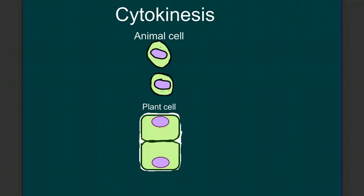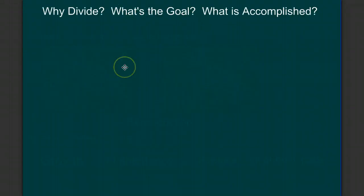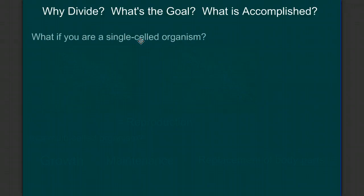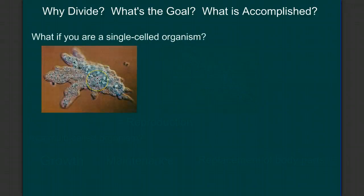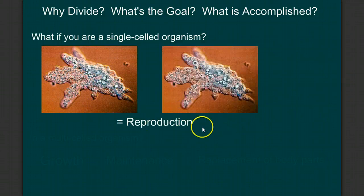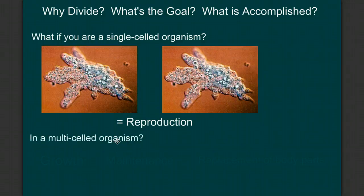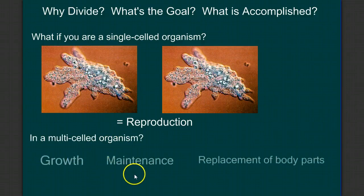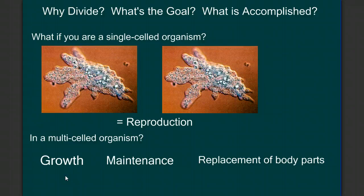Now let's talk about the purpose — what are we accomplishing by dividing a cell? If you're a single-celled organism and you undergo mitosis and cell division, that would be reproduction. But in a multicellular organism, mitosis and cell division can be used for growth, maintenance, and replacement of body parts. You've grown into your current size by adding cells.